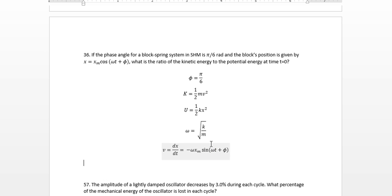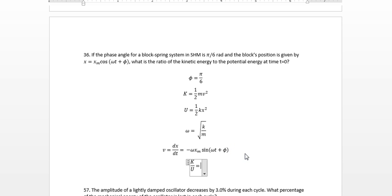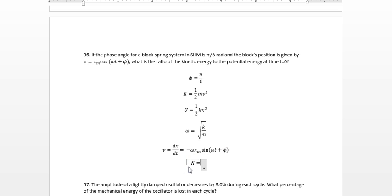And we're looking at the ratio of kinetic energy to potential energy at the point where t is zero. So, if we do that, we want k over u. Let me, let's go back to this.